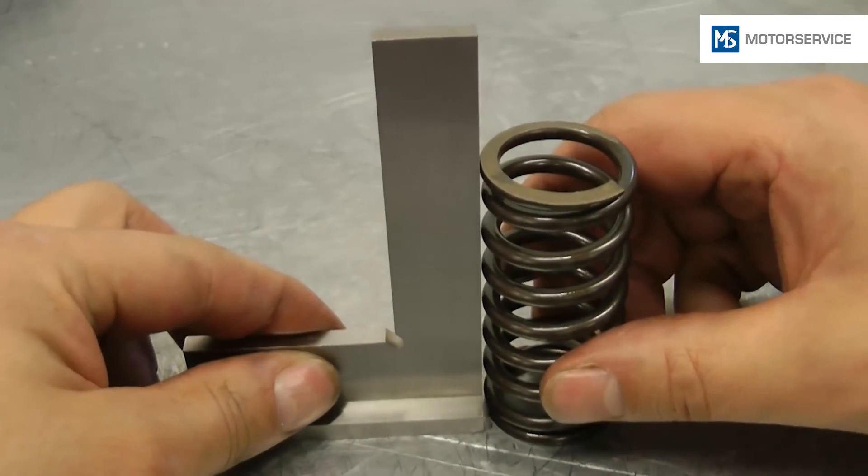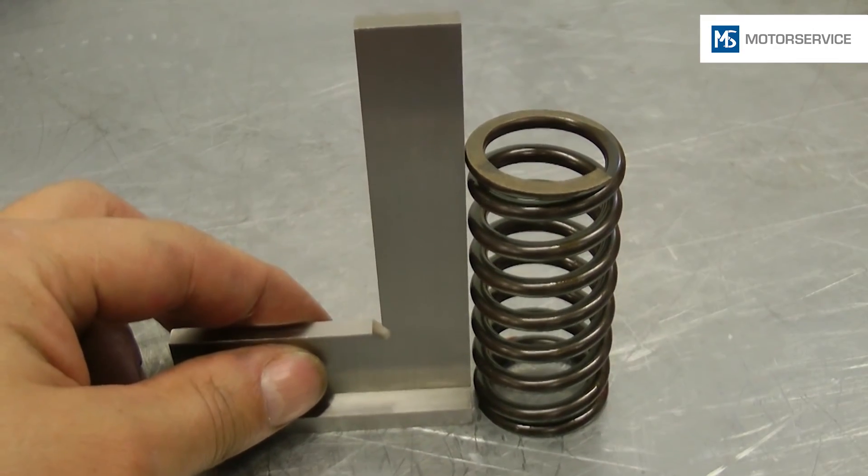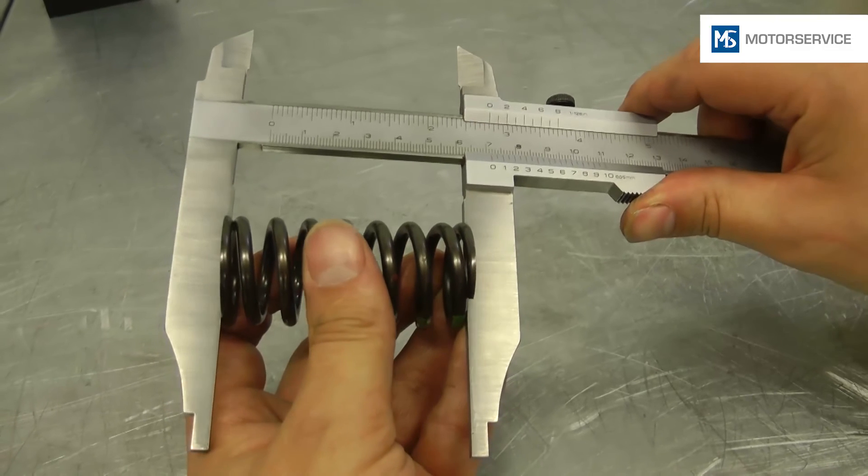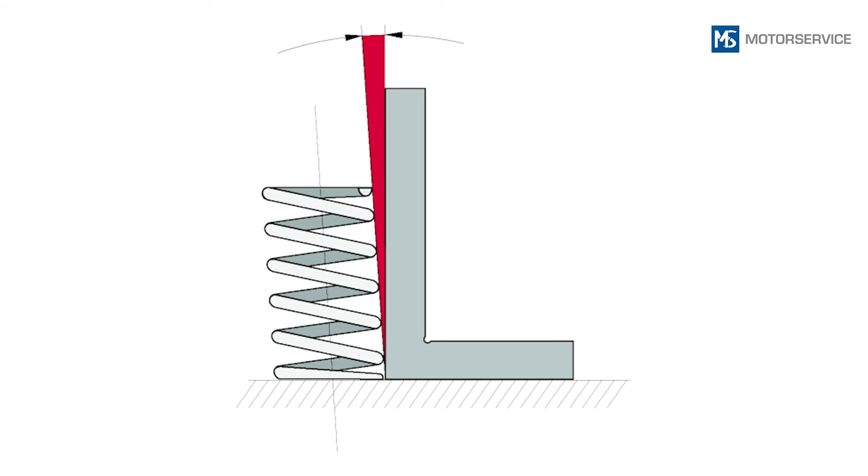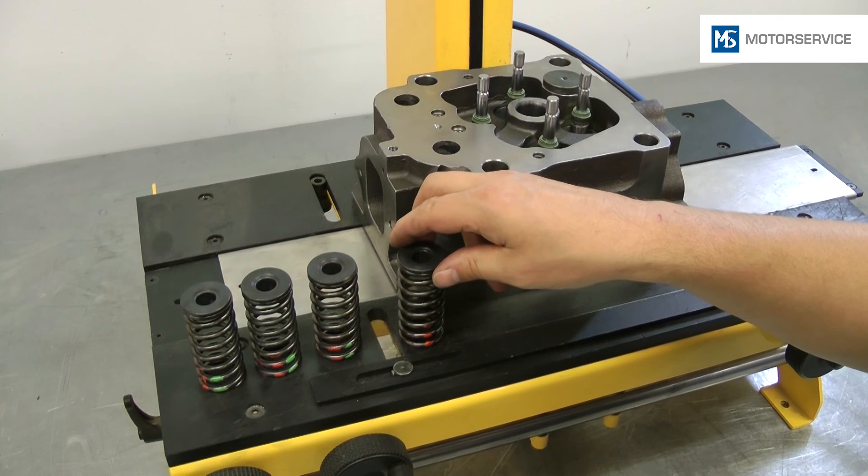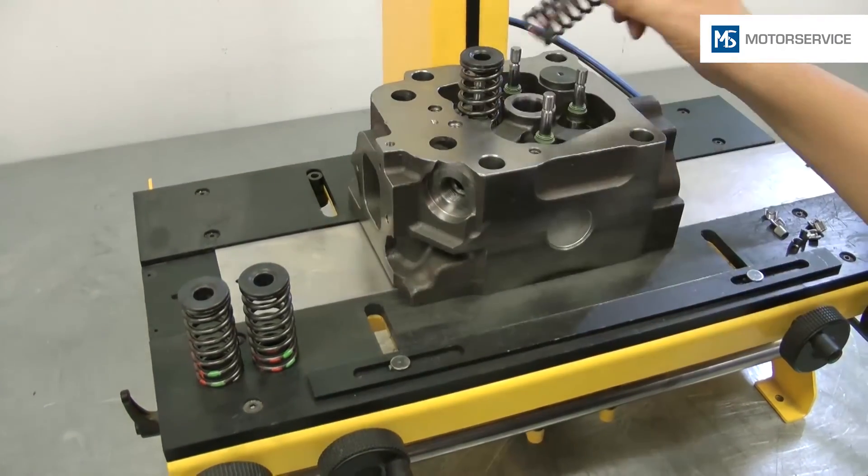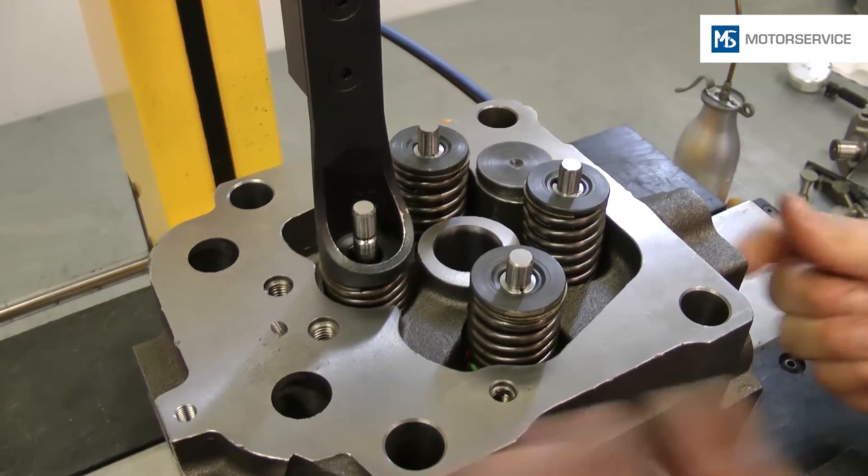Attention: the valve springs must be checked for perpendicularity and length before they are inserted. Bent valve springs must be replaced. Following assembly of the valve springs and insertion of the valve cotter halves, the cylinder head is ready for assembly.